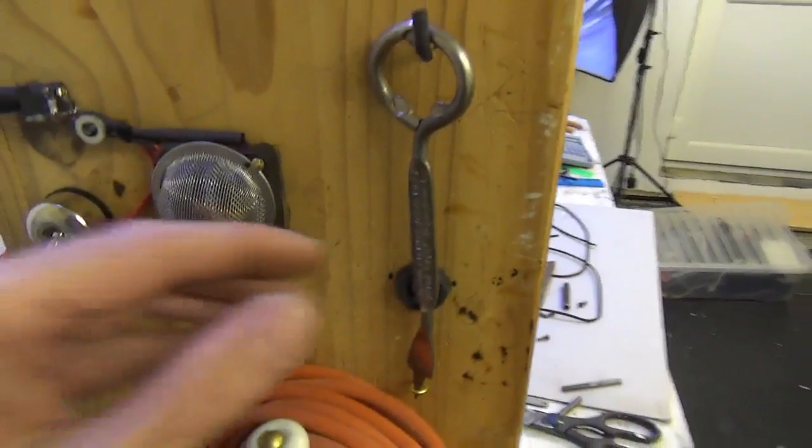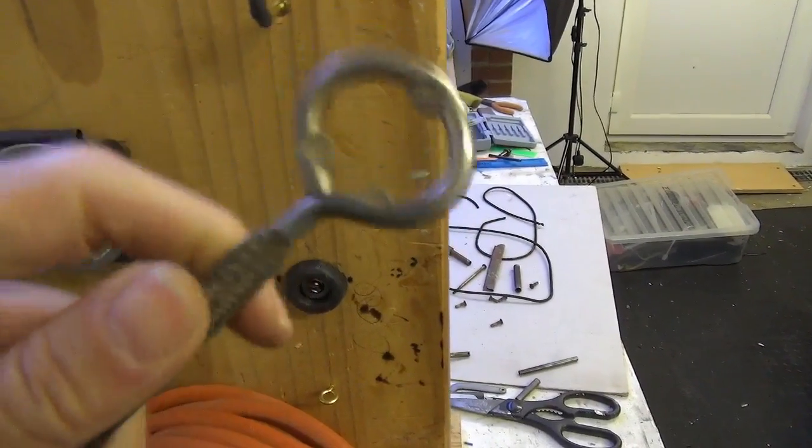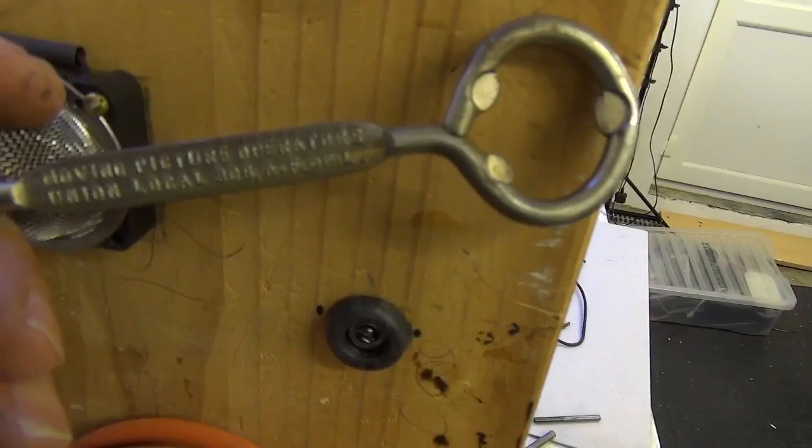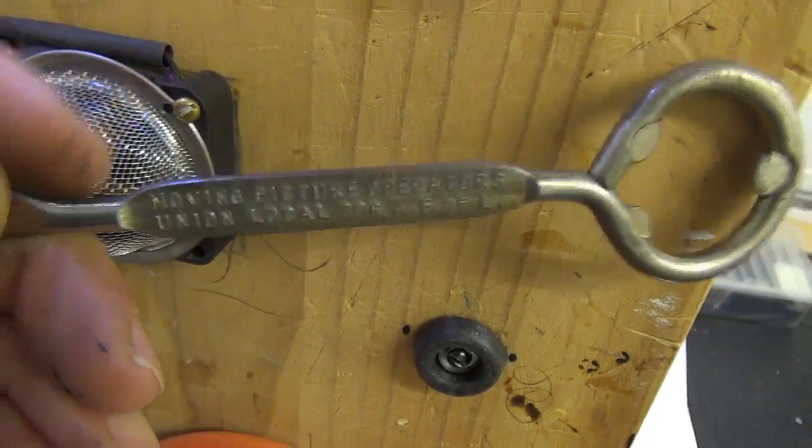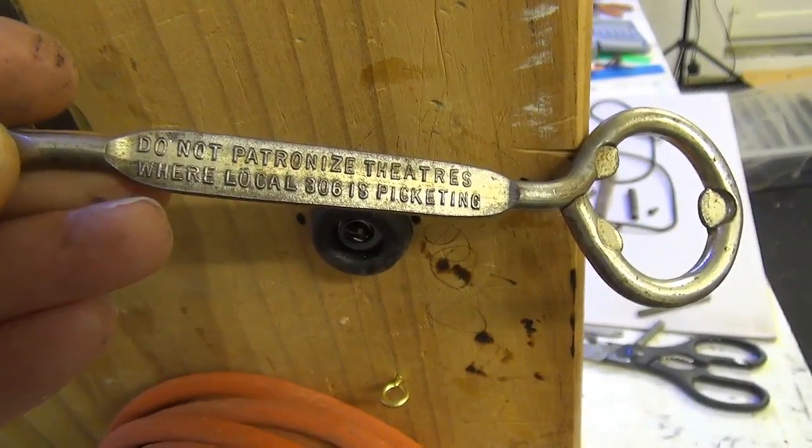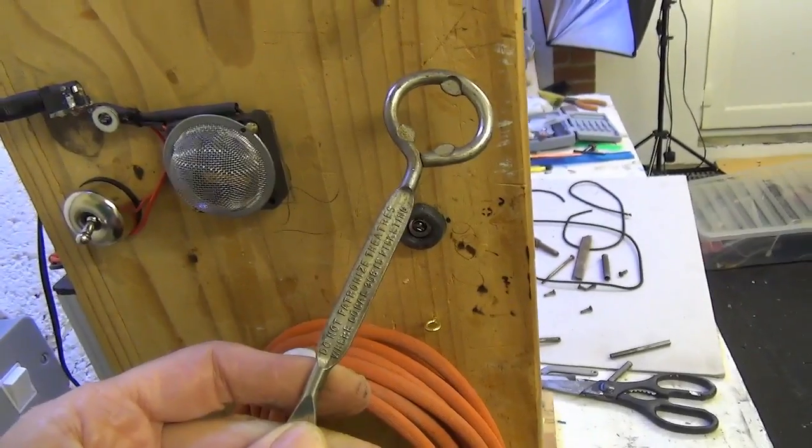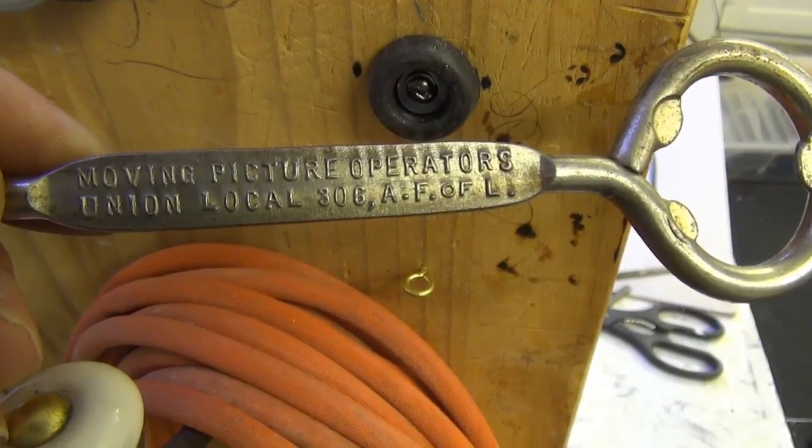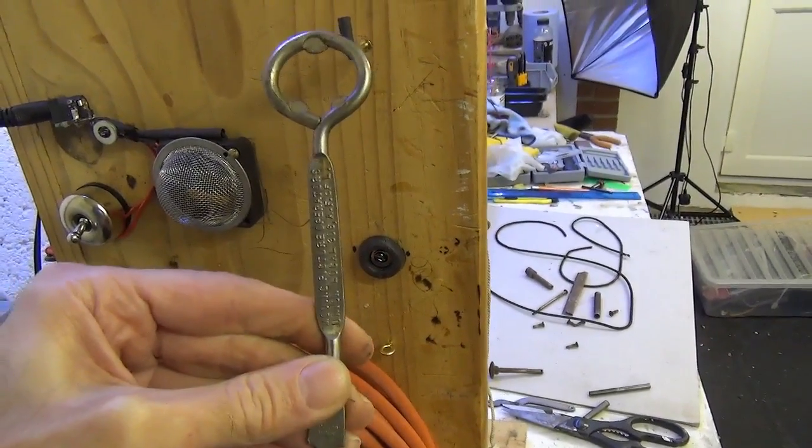Here is perhaps the most important one of all: a period bottle opener. It says on this side 'Moving Picture Operators Union Local 306, AFL. Do not patronize theatres where Local 306 is picketing.' We have a period, and I think it really is period, possibly even pre-First World War, certainly early '20s latest I would think. Moving Picture Operators Union—'operators' was the term for projectionist. So we have a period projectionist bottle opener, essential when you're travelling around with a projector.